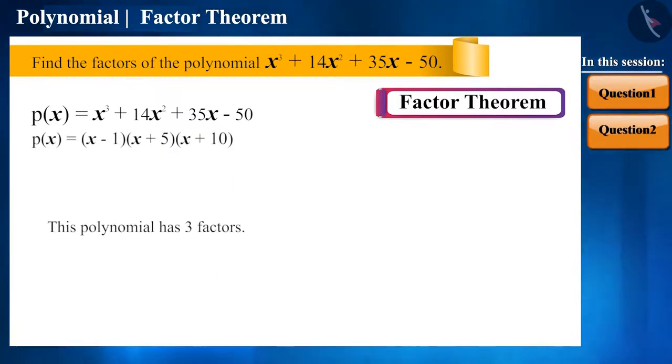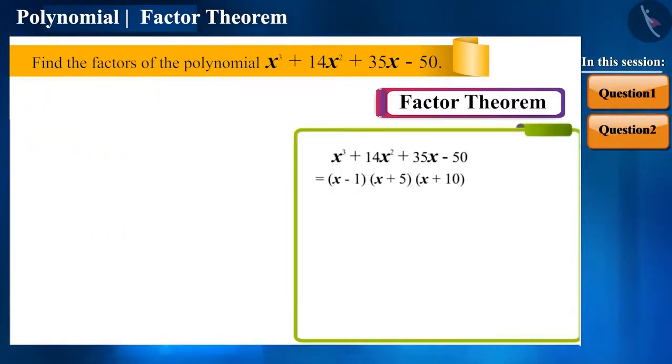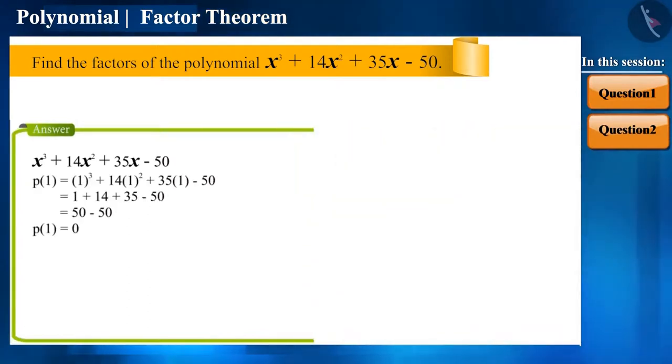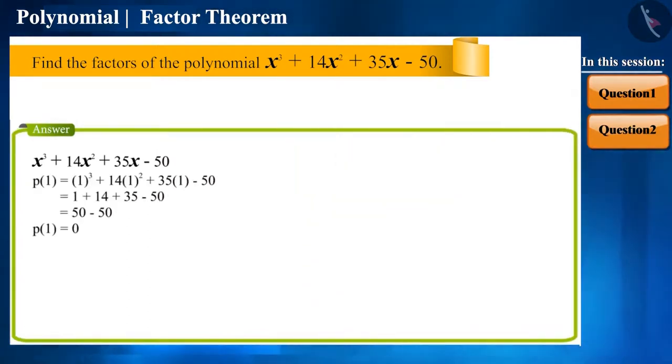Friends, after finding the first factor, you can solve it without finding the other factors. Let's see how. When we got p of 1 as 0, we derived our first factor x minus 1. So, now let's take x minus 1 common from this cubic polynomial.